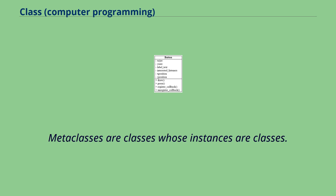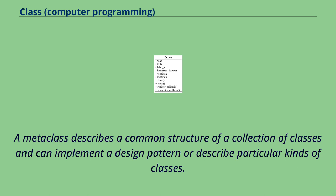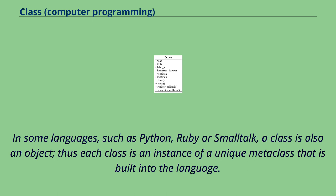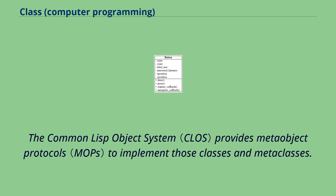Metaclasses are classes whose instances are classes. A metaclass describes a common structure of a collection of classes and can implement a design pattern or describe particular kinds of classes. Metaclasses are often used to describe frameworks. In some languages such as Python, Ruby, or Smalltalk, a class is also an object, and thus each class is an instance of a unique metaclass that is built into the language. The Common Lisp Object System provides meta-object protocols to implement those classes and metaclasses.